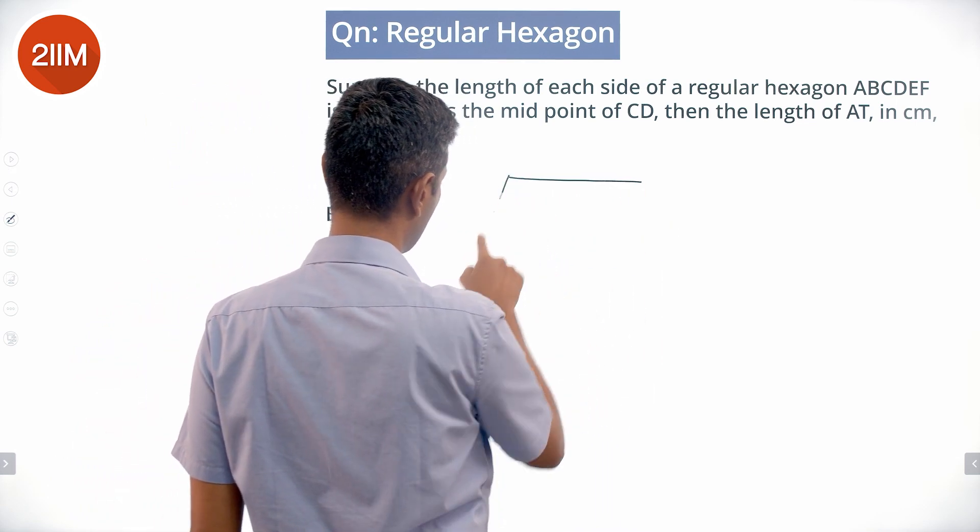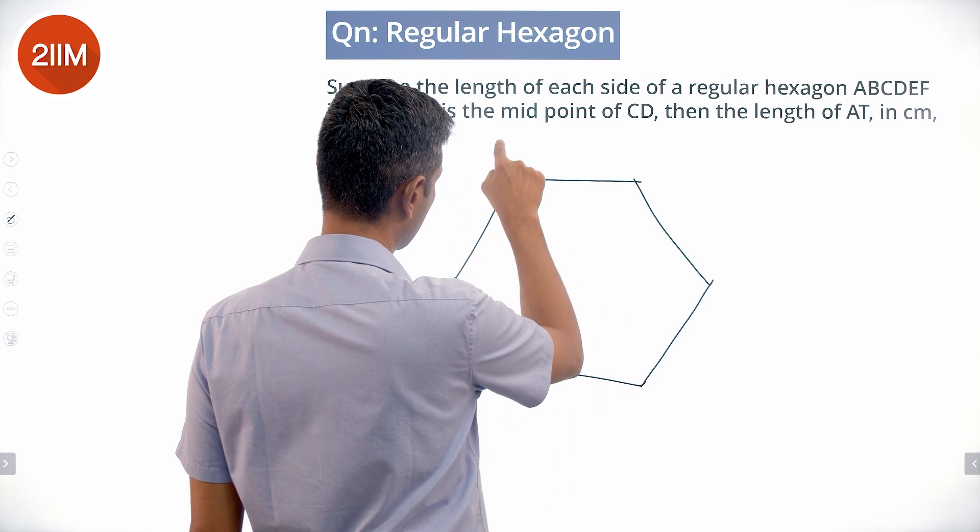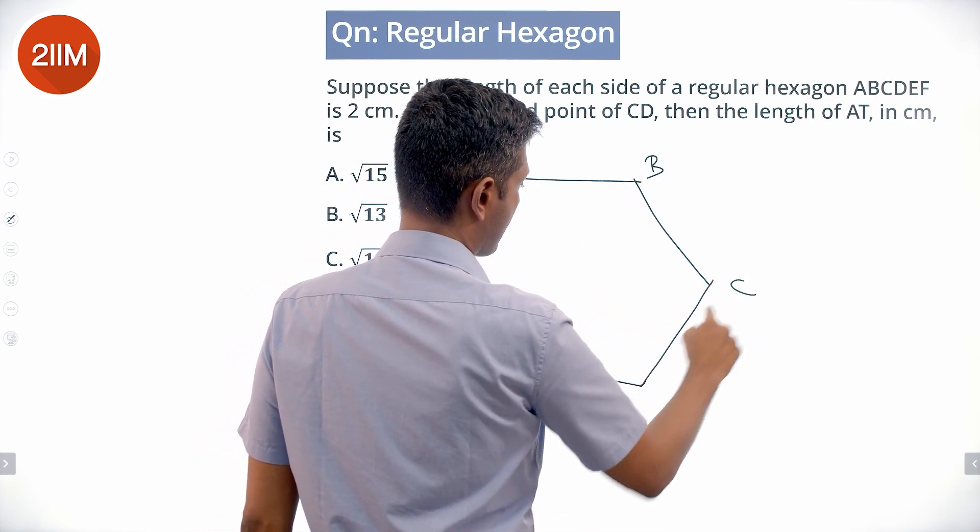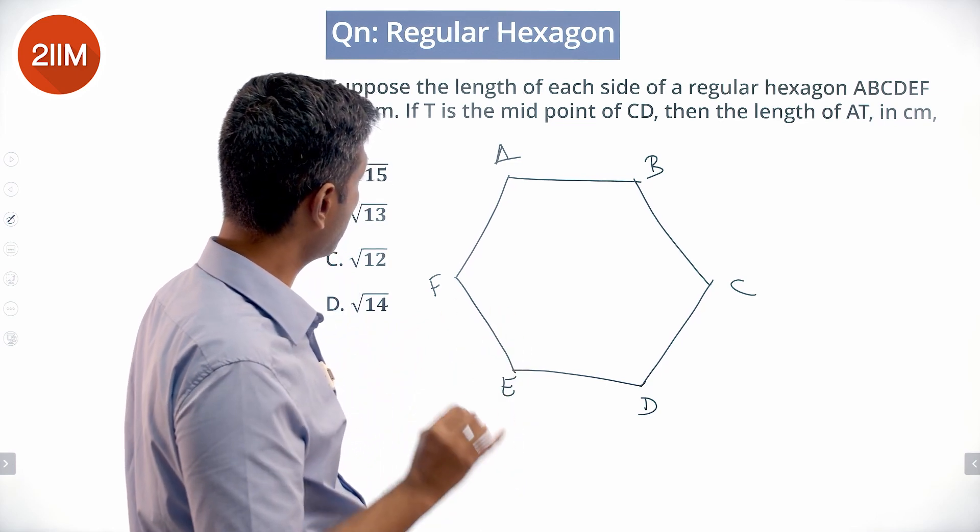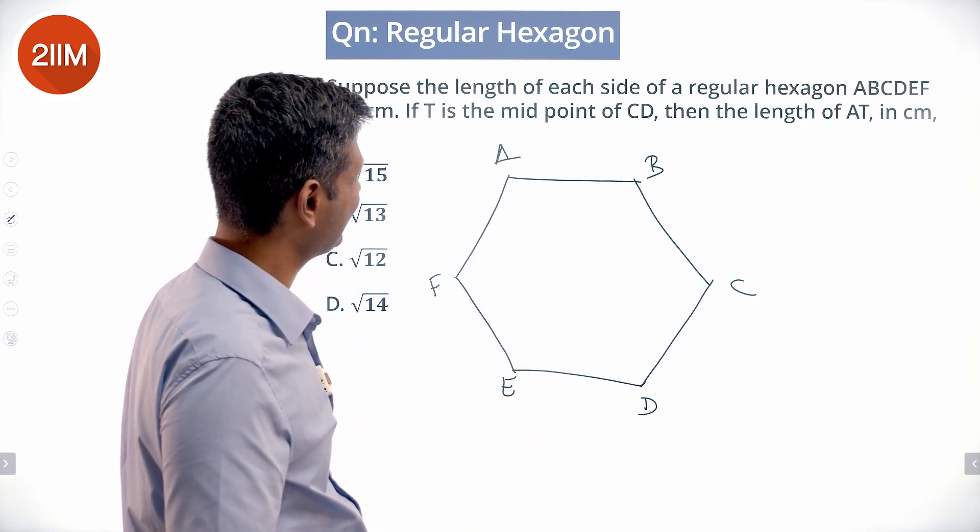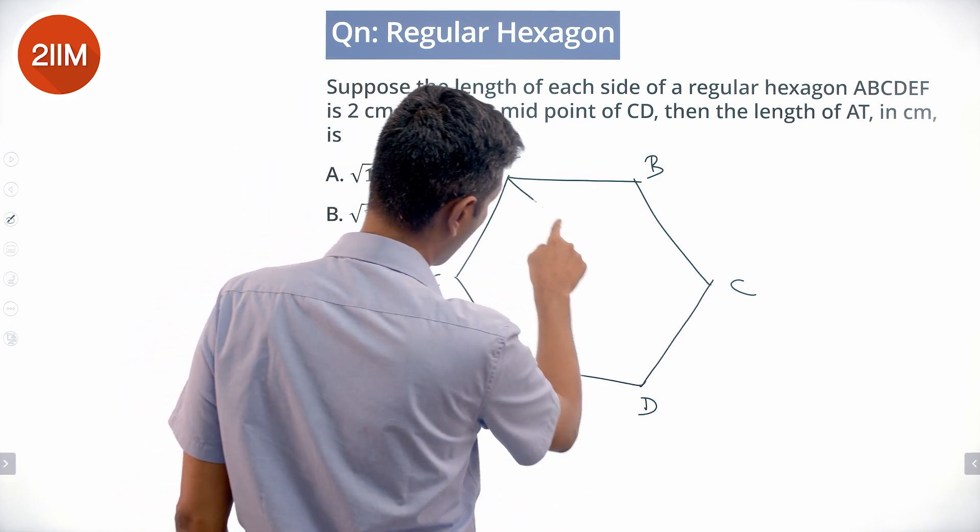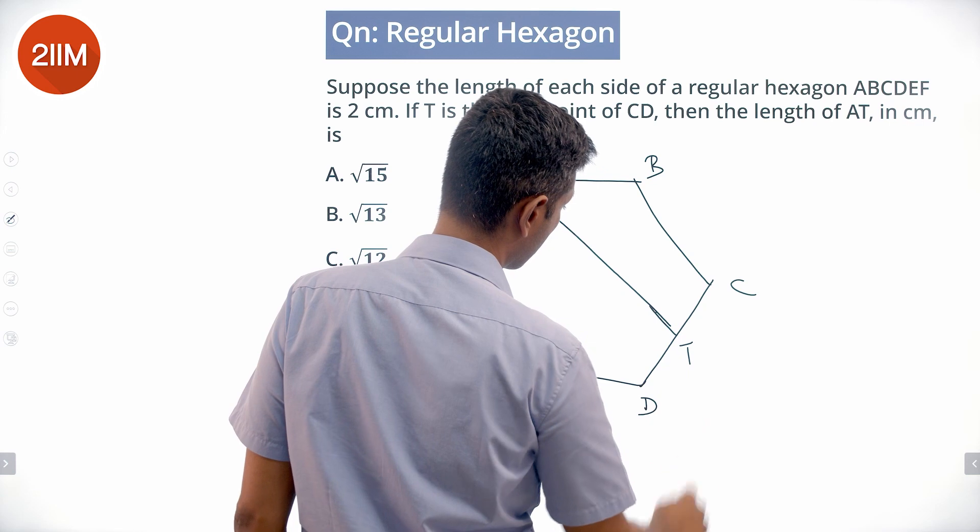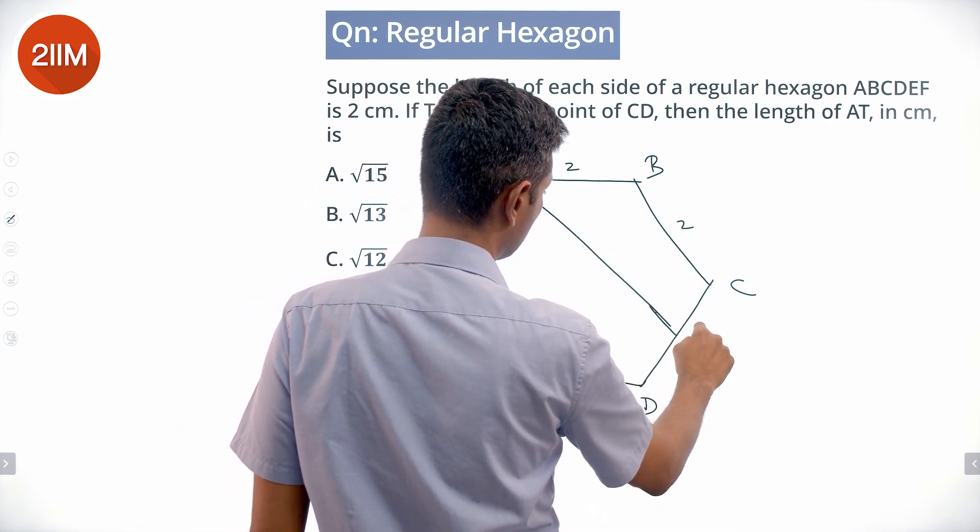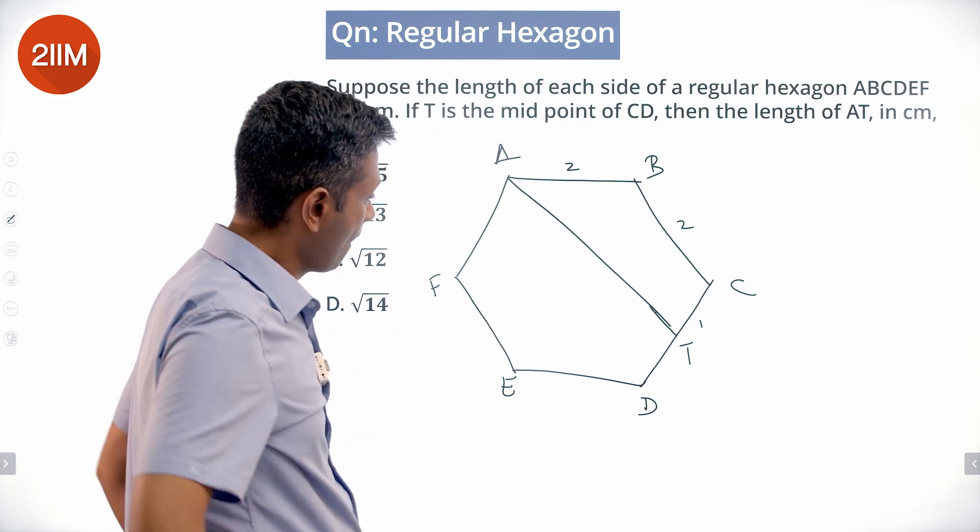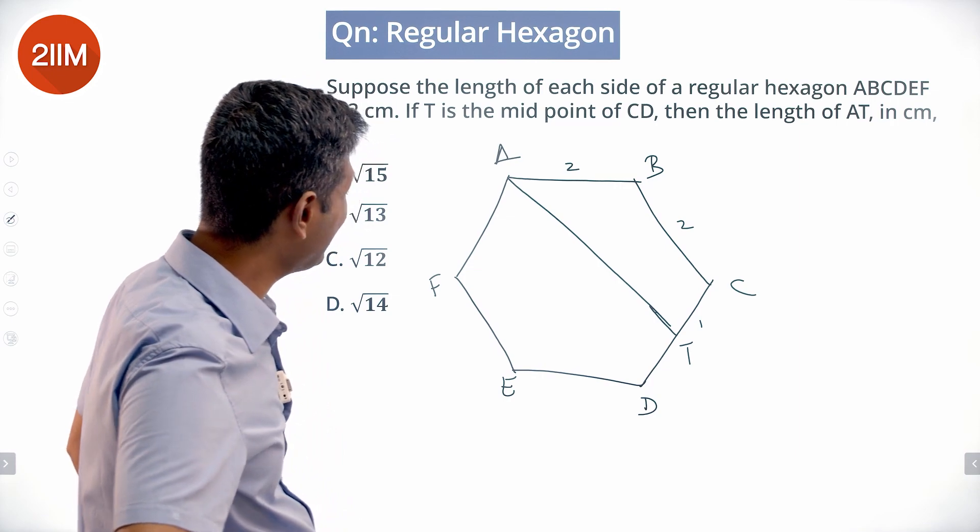We have a regular hexagon ABCDEF. Each side measures 2. T is the midpoint of CD. We want to find the length of AT in centimeters. So let us draw this.